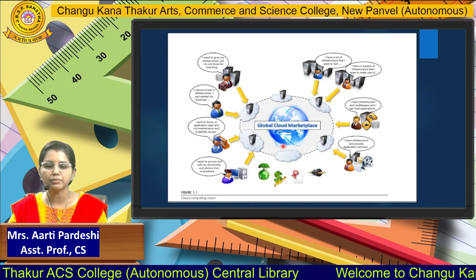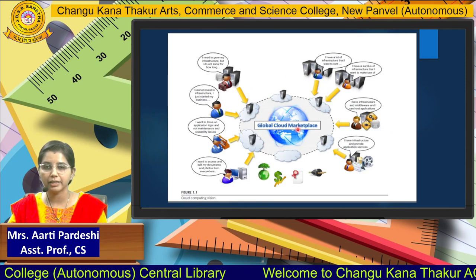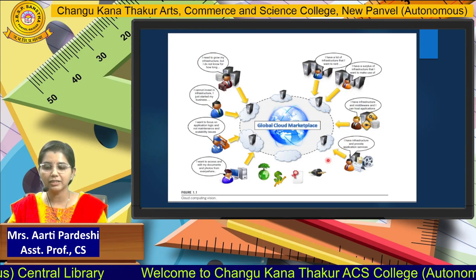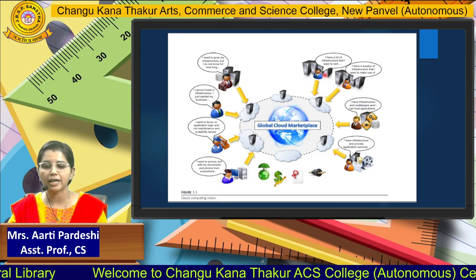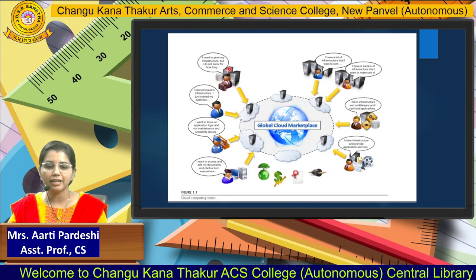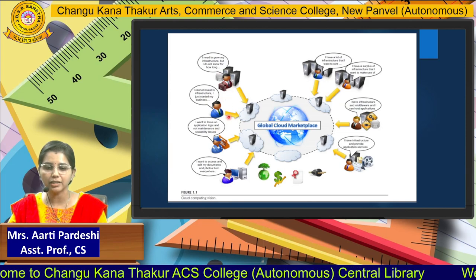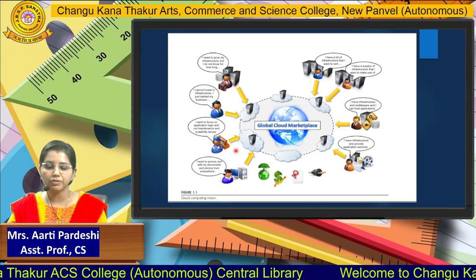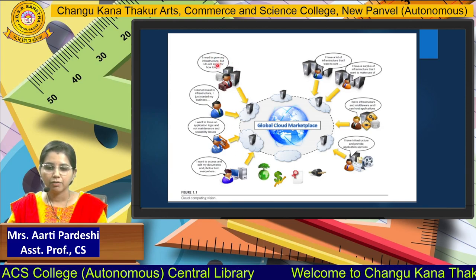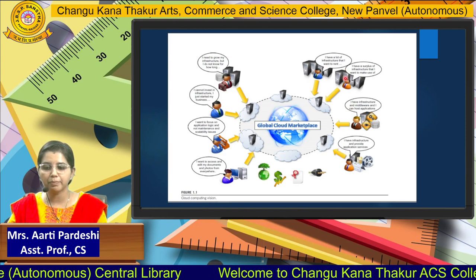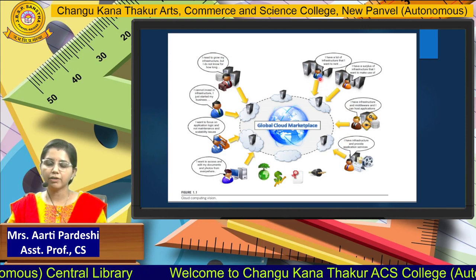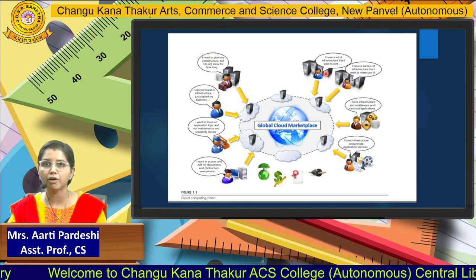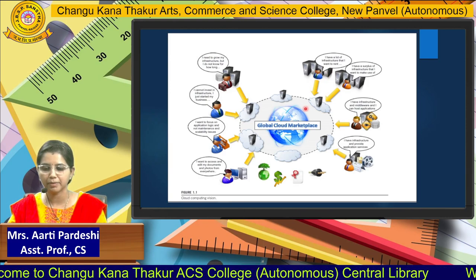The next diagram represents how the cloud marketplace is globally available. On the right-hand side, you can see the services which providers can deliver. On the left-hand side are the clients requesting services. For example, if an owner has lots of infrastructure and wants to put it on rent, he can do so in the cloud marketplace. If he wants to sell it rather than rent it, he can do that as well.